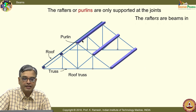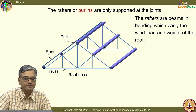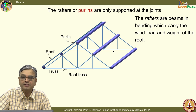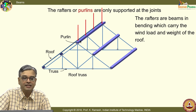These are also called rafters. You should notice that they are supported only at the joints — supported at the ends. They are the simplest beams that you can analyze. And the kind of load they experience is essentially transverse loading.